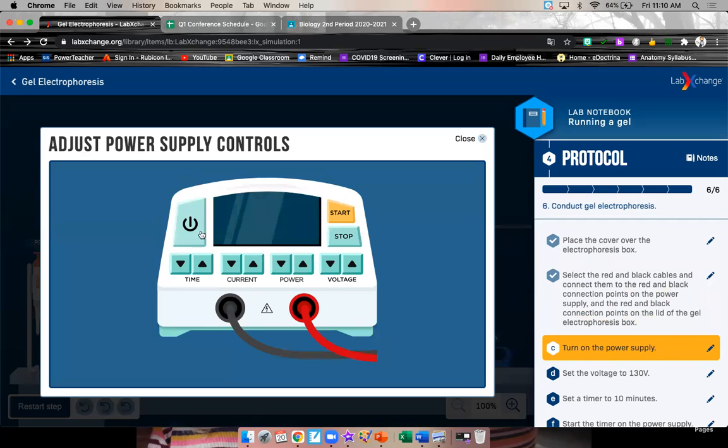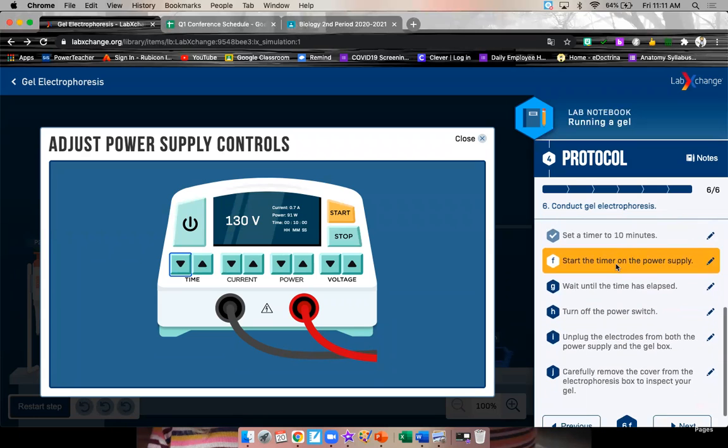All right, turn on the power supply. There's your on button. Set the voltage, voltage is right here, to 130. We have zero volts, so add it up. Set the timer for 10 seconds. Here we have hours, minutes, and seconds written right down here. So we want the minutes at 10. Start the timer on the power supply. Our time is sped up.